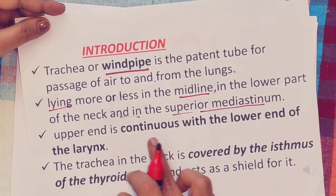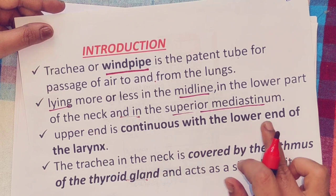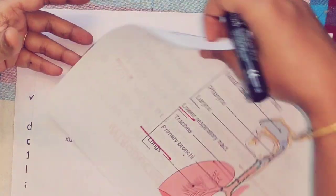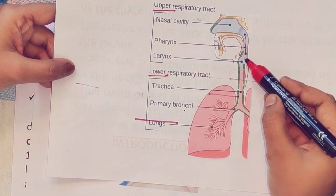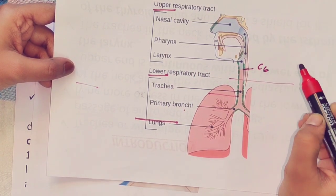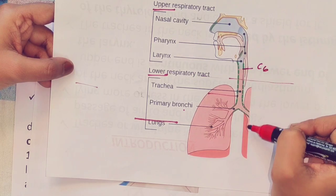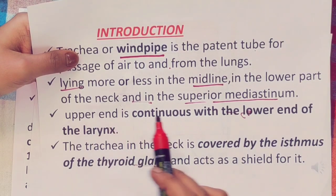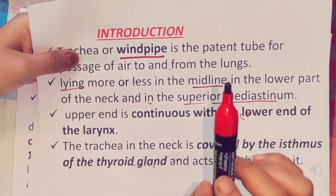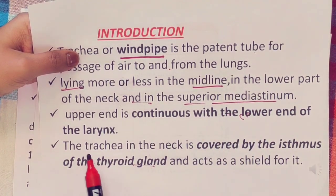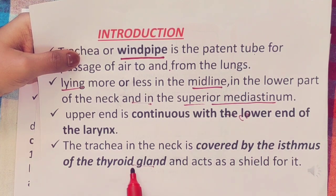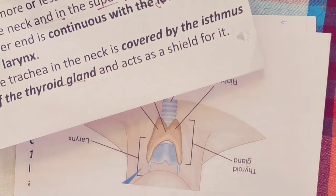The upper end of the trachea: it is continuous with the lower end of the larynx at the level of the C6 cervical vertebra. In the neck, the trachea is covered anteriorly by the isthmus of the thyroid gland, which acts as a shield for it.